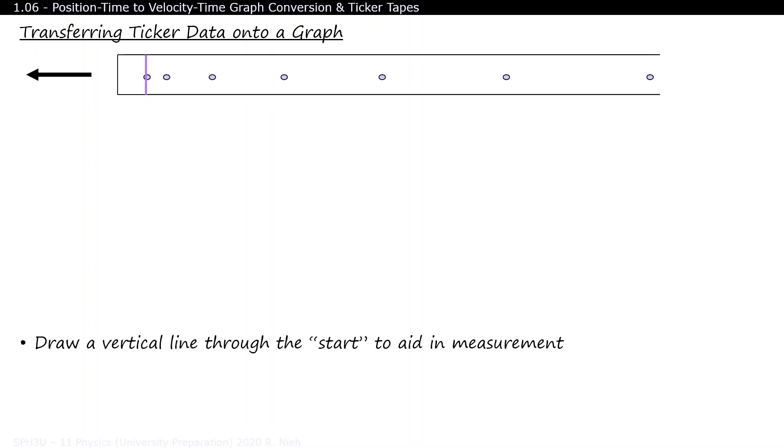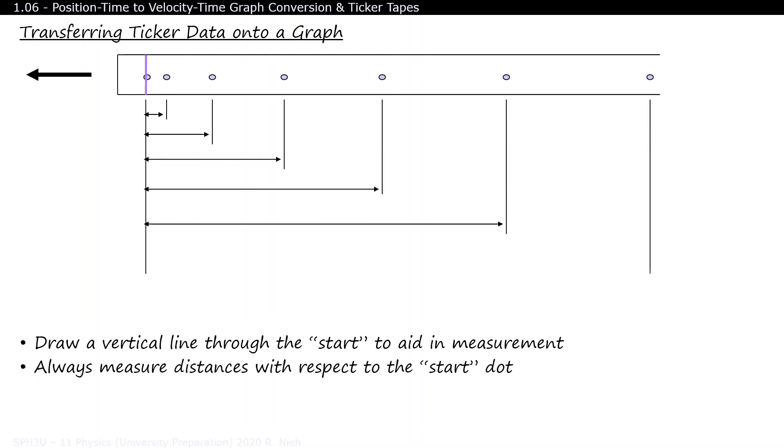When you measure the position of the object on a ticker tape, make sure that you measure the dots relative to the starting dot. It helps to draw a vertical line through the first dot and measure all adjacent dots relative to the first dot. Also, call the first dot, dot number zero. After all, this is the dot at zero seconds.